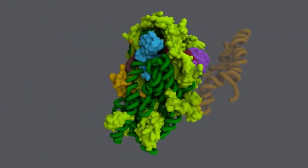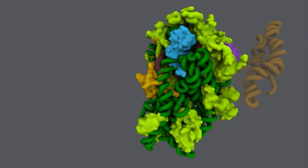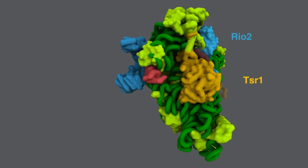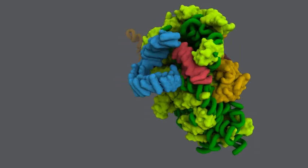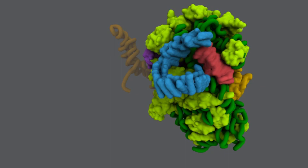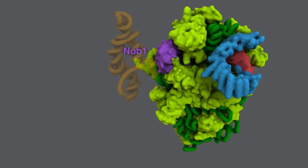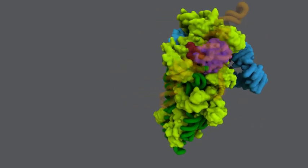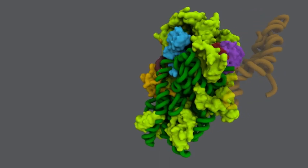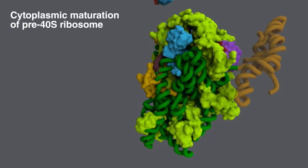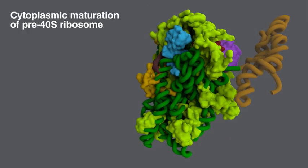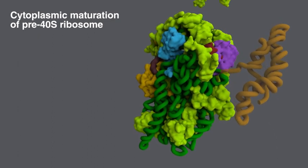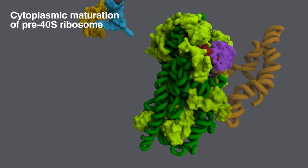After arrival in the cytoplasm, the final maturation of the pre-40S subunit is initiated. This begins with the extraction of the remaining biogenesis factors, further RNA compaction and rearrangement, and incorporation of the last missing ribosomal proteins. A final RNA cleavage, called the D-site cleavage, releases the still-attached piece of the ITS-1 from the mature 18S rRNA.